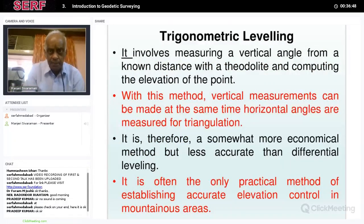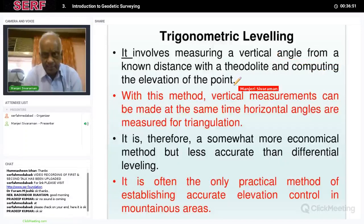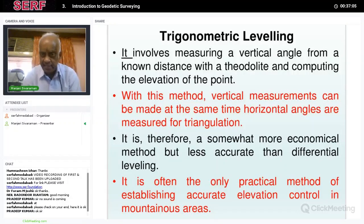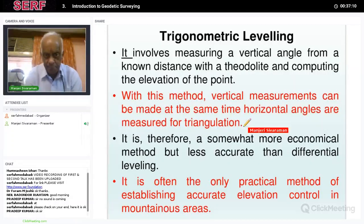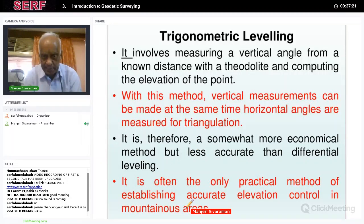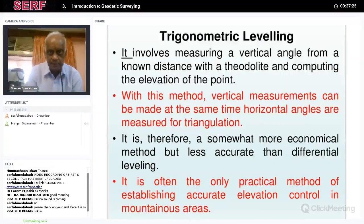Trigonometric leveling involves measuring the vertical angle from a known distance with a theodolite and computing the elevation of that point. With this method, vertical measurements can be made while horizontal circles are also measured for triangulation. So triangulation and leveling are done simultaneously, giving you the coordinates as well as the height. It is somewhat more economical but less accurate than differential leveling. It is often the only practical method of establishing accurate elevation control in mountainous areas.